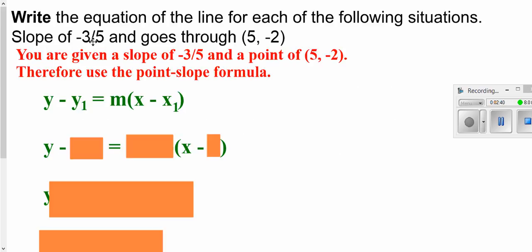So on this one here we're given a slope and we're given a point that it goes through. Since you're given a slope and given a point, we're going to use the point-slope formula.